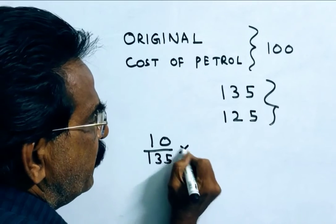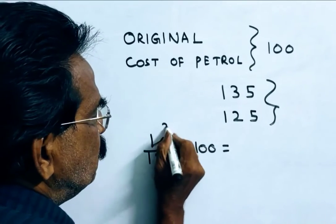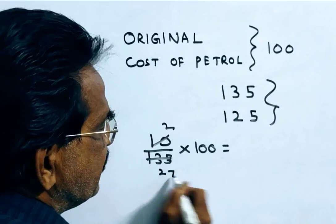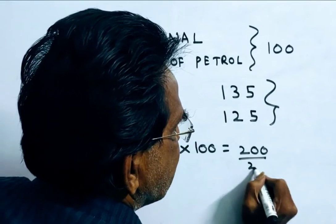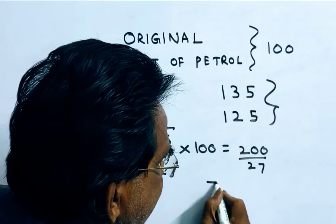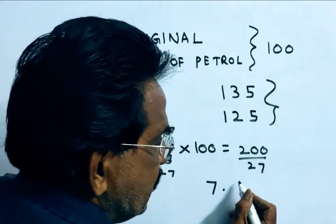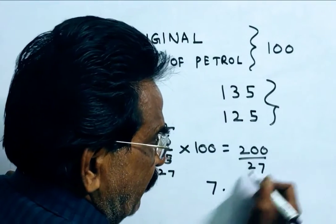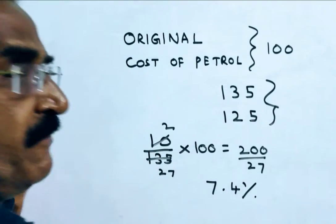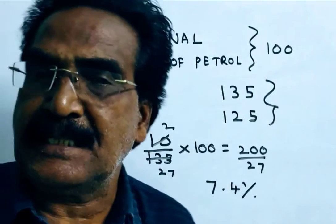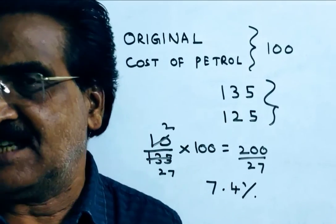Working out the division: 10 over 135 multiplied by 200 gives us 200 by 27. Solving: 27 sevens are 189, remainder 11; bringing down — 27 fours are 108. So the answer is approximately 7.4%. Rajesh has to reduce his consumption by 7.4%.